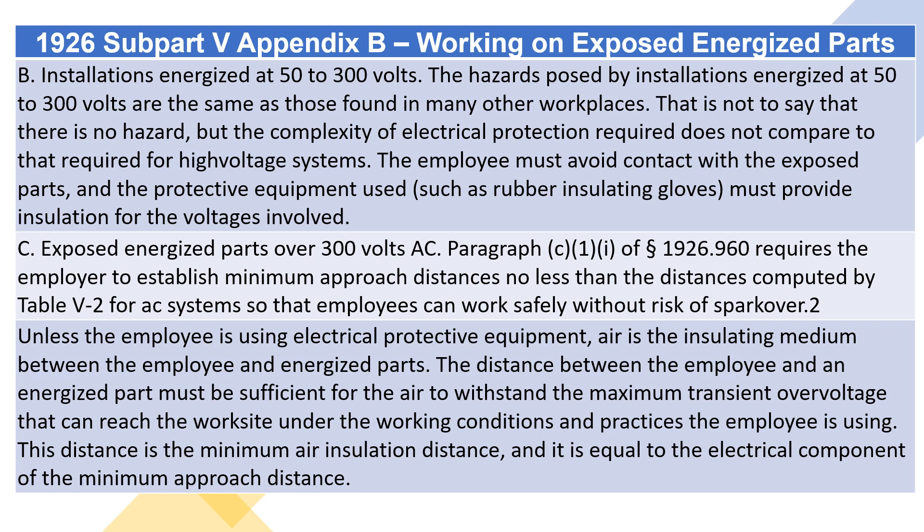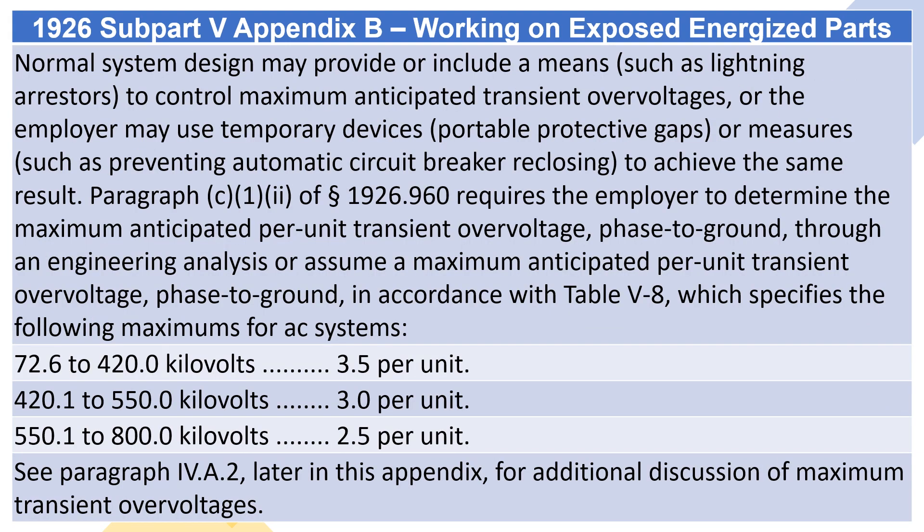Unless the employee is using electrical protective equipment, air is the insulating medium between the employee and energized parts. The distance between the employee and an energized part must be sufficient for the air to withstand the maximum transient overvoltage that can reach the worksite under the working conditions and practices the employee is using. This distance is the minimum air insulation distance, and it is equal to the electrical component of the minimum approach distance. Normal system design may provide means such as lightning arresters to control maximum anticipated transient overvoltages, or the employer may use temporary devices, portable protective gaps, or measures such as preventing automatic circuit breaker reclosing, to achieve the same result.